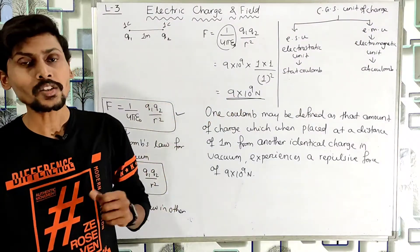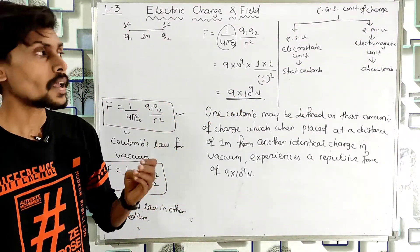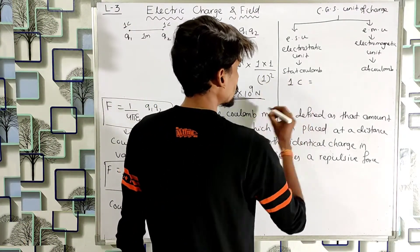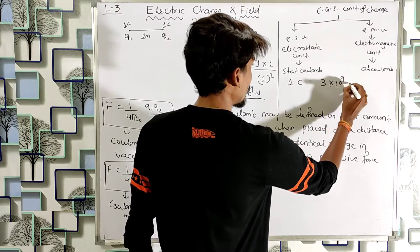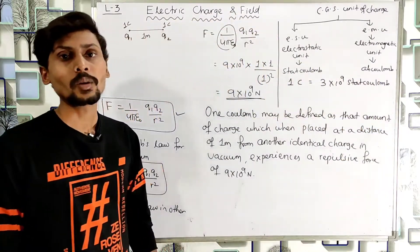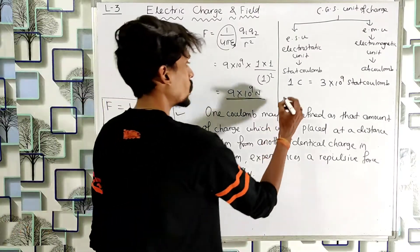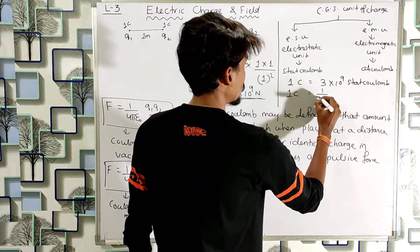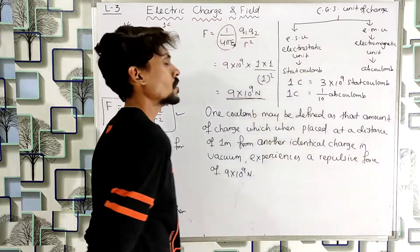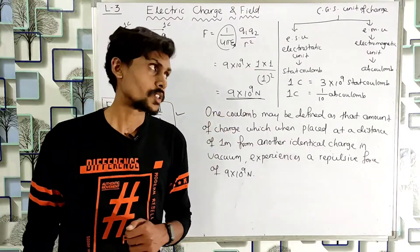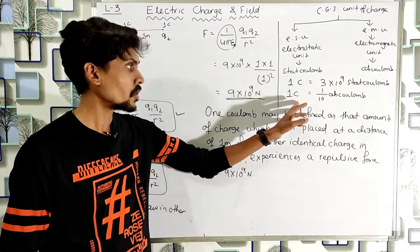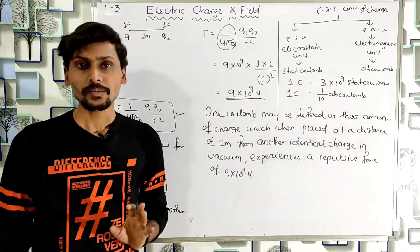Statcoulomb and Abcoulomb are both CGS units, where Statcoulomb is the electrostatic unit and Abcoulomb is the electromagnetic unit. The relations among them are: 1 Coulomb = 3 × 10⁹ Statcoulomb, and 1 Coulomb = 1/10 Abcoulomb.